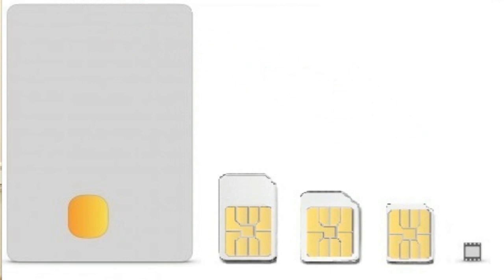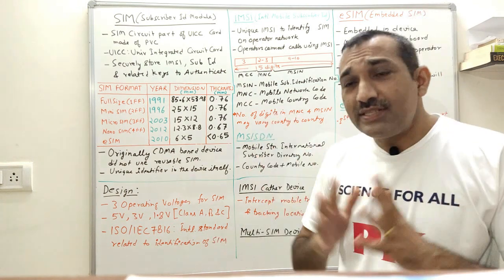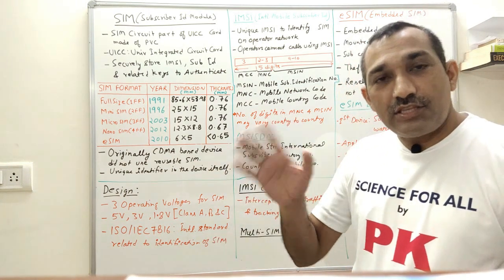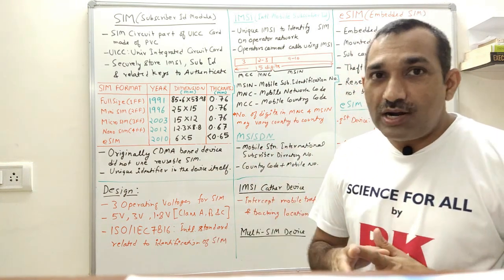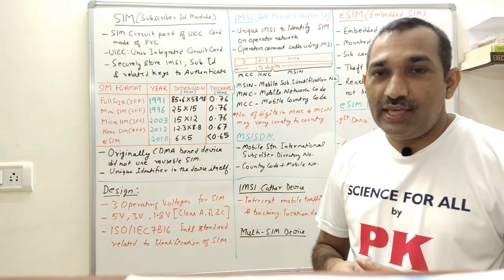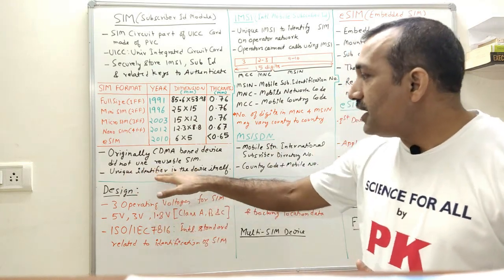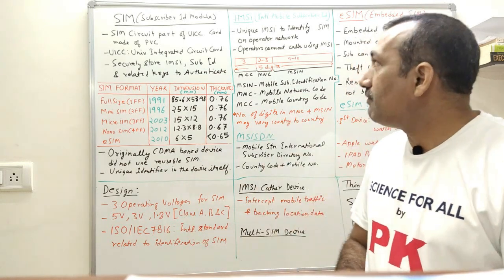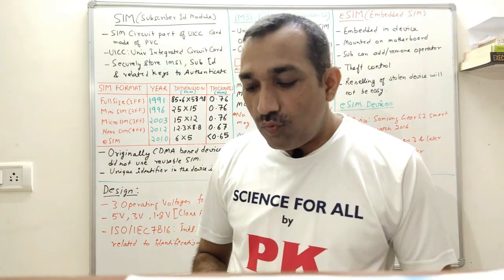Originally, CDMA devices did not have a SIM card system — only GSM mobile phones used SIM cards. In CDMA, the unique identifier was embedded in the device itself.